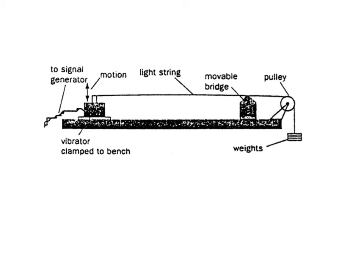A movable bridge is optional — it enables you to control the distance where you want to see the stationary wave. If you put a movable bridge, only the part between the bridge and the oscillator will show the stationary wave. Without a movable bridge, the stationary wave forms throughout the whole string. The weights give you the tension in the string. When you turn on the signal generator, as the vibrator moves up and down, it sends a wave down the string, which hits the bridge and bounces back, giving you two waves traveling in opposite directions.